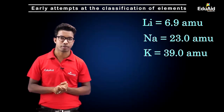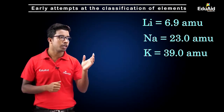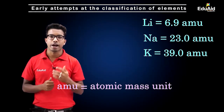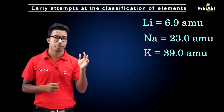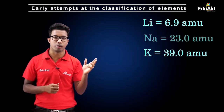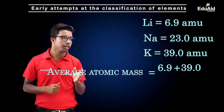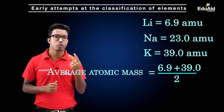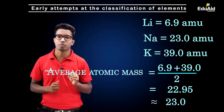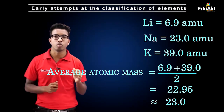For example, one of Döbereiner's Triads is lithium, sodium, and potassium. Lithium has a mass of 6.9 amu, sodium has a mass of 23.0 amu, and potassium has a mass of 39.0 amu. The middle element is sodium with mass 23.0, and the average of lithium and potassium is (6.9 + 39.0) / 2 = 22.95, which is almost 23.0. So these three elements obey the condition and are in a Döbereiner Triad.